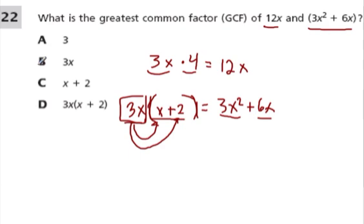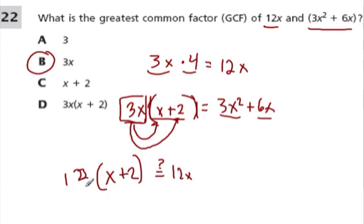I know it goes into both of them, so it's definitely a common factor, and I'm thinking it's the greatest common factor. For example, if I chose C, x + 2, how would I multiply x + 2 to get 12x? Not so easy. What am I going to multiply by? If I try 12, I get 12x + 24. I don't think there's any way to do it evenly with whole numbers. So C is out.